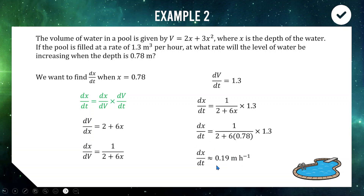The key is reading the question, identifying what you're trying to find, identifying what you've been given, and recognising that you can split apart variables and do some differentiation. Sometimes formulas will be given to you; sometimes you need to know them. Being an Extension 1 student means you need to be across all your volume and area formulas and that kind of stuff.